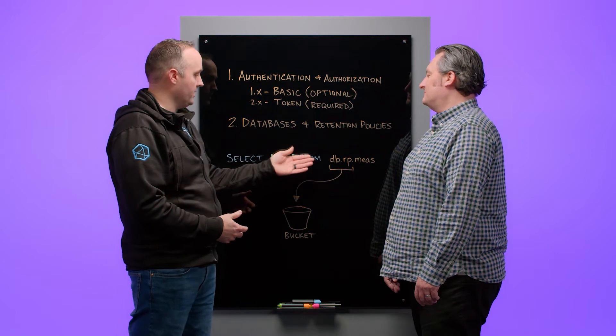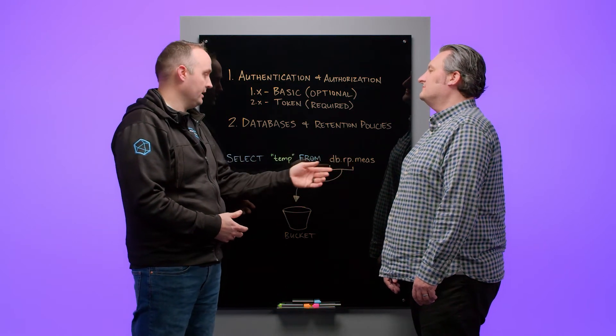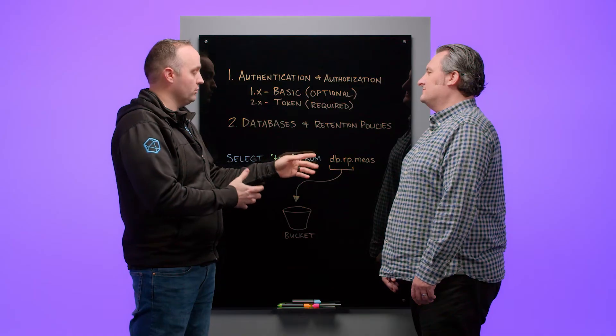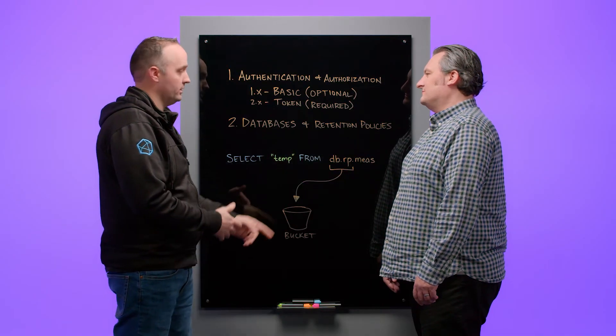So in this query, we're selecting the temperature field from a DBRP measurement. With mapping set up, the InfluxQL crest then gets mapped to the appropriate bucket.